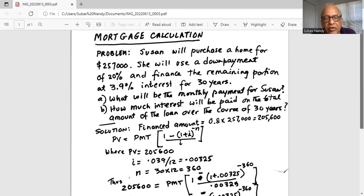PV is the present value. Payment is the monthly payment amount multiplied by, in parenthesis, 1 minus 1 plus i, exponent or power is minus n, divided by i.